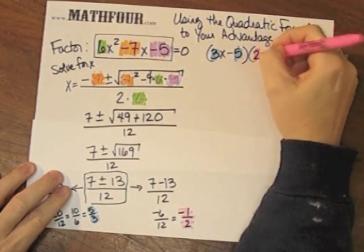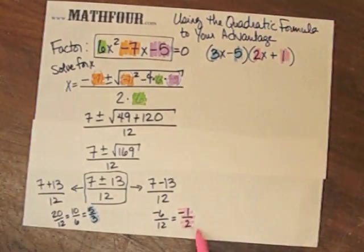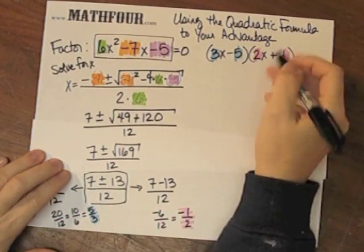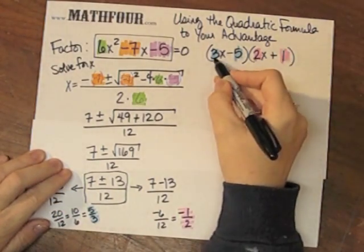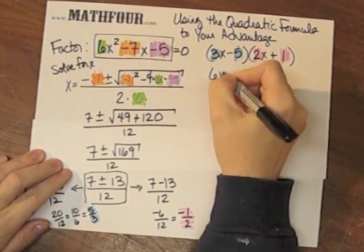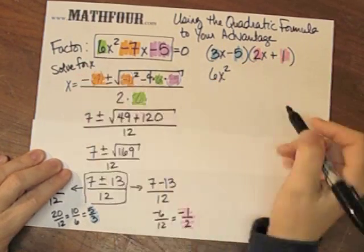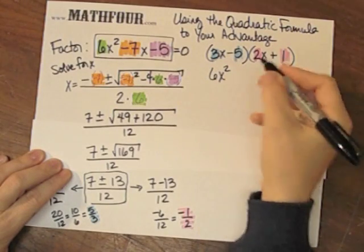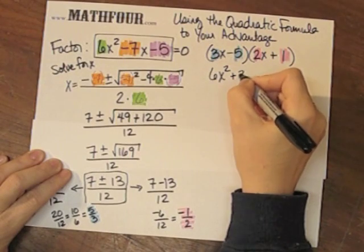And, here's my 2 and 1. And, let's just multiply this out to check. 3x times 2x is 6x squared. Good so far. 3x times 1 is 3x.